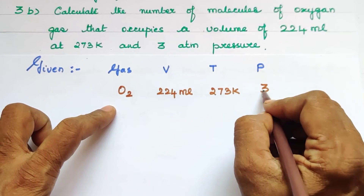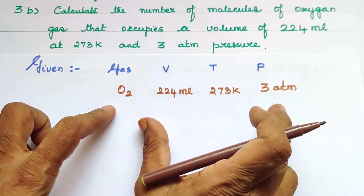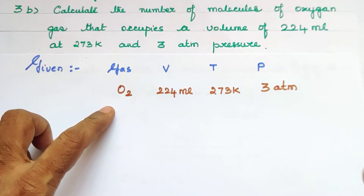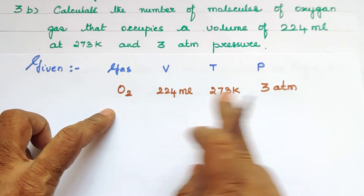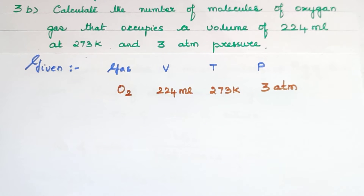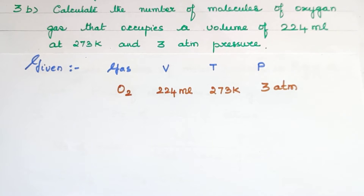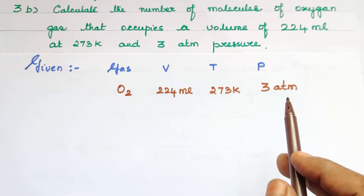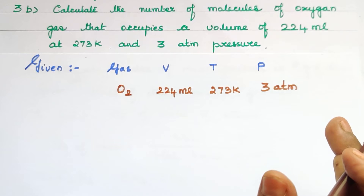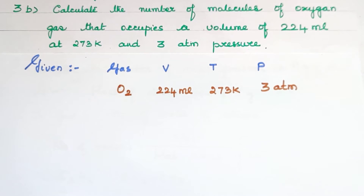From the question, the given information is volume = 224 mL, temperature = 273 K, and pressure = 3 atm. What is asked is the number of molecules of oxygen. We will first find the number of moles, and then convert to number of molecules. This question is based on molar volume — do you know the definition of molar volume?